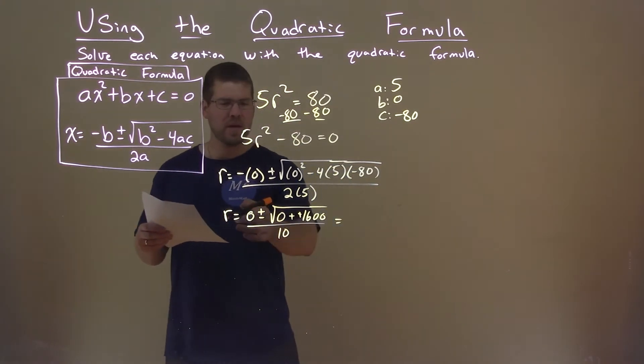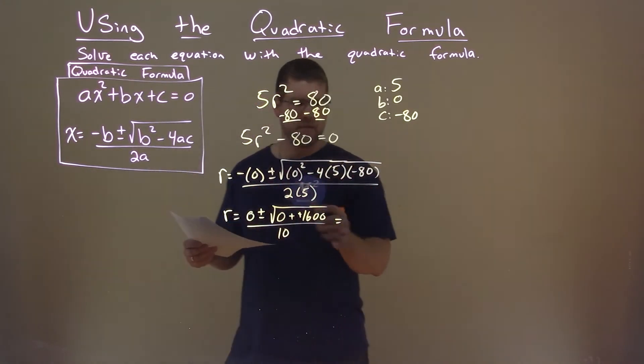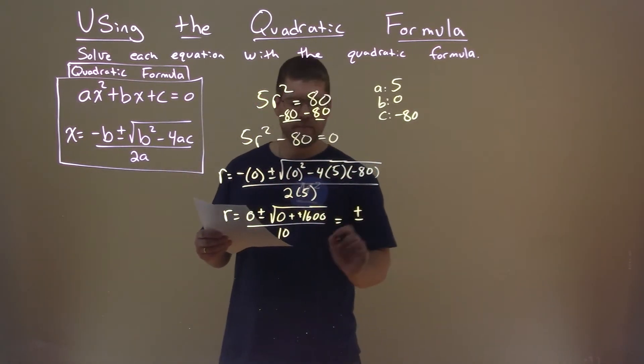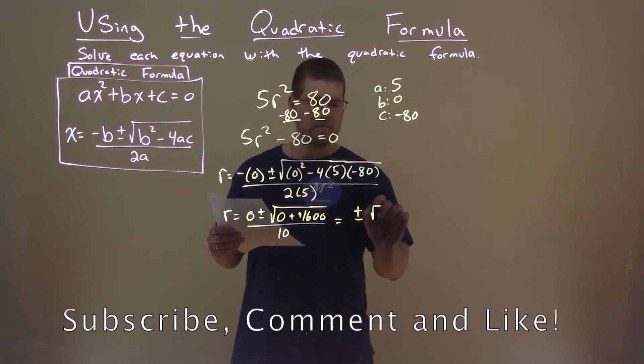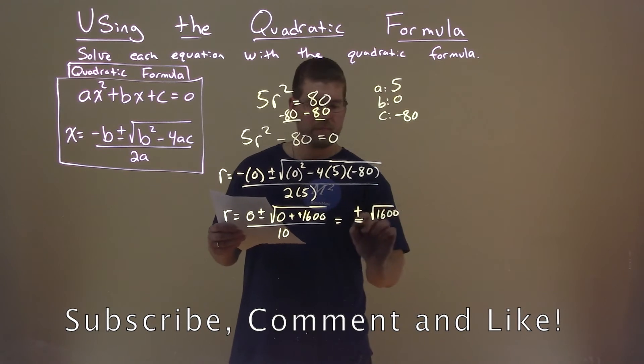So let's just simplify this. That 0 doesn't really do anything for us, so we have plus or minus here, square root of 0 plus 1600, is just 1600, over 10.